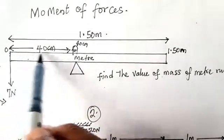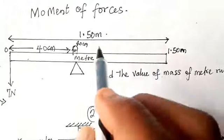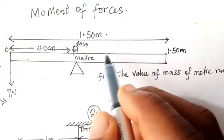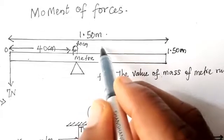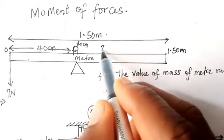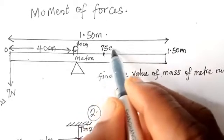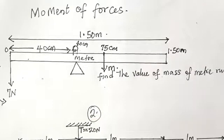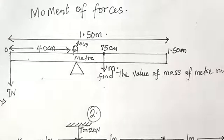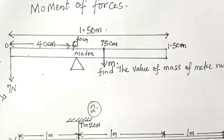This 1.5 meters will definitely place the center of gravity at 0.75 meters, so if I call this place 75 centimeters, then at that point the mass of the meter rule acts — because that is the middle of the meter rule and that is where the mass of the meter rule will act. There is another case also.